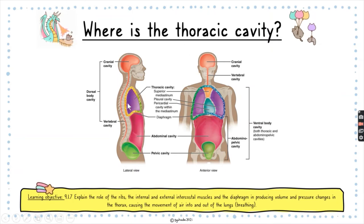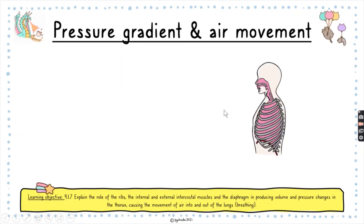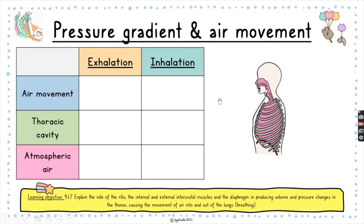The thoracic cavity is the space inside our body — shown here from a side view and a front view. We have the head, the thorax, and the abdomen. The thoracic cavity is the space inside the thorax, which is also where our lungs sit. During inhalation and exhalation, the relationship between the thoracic cavity and atmospheric air changes.